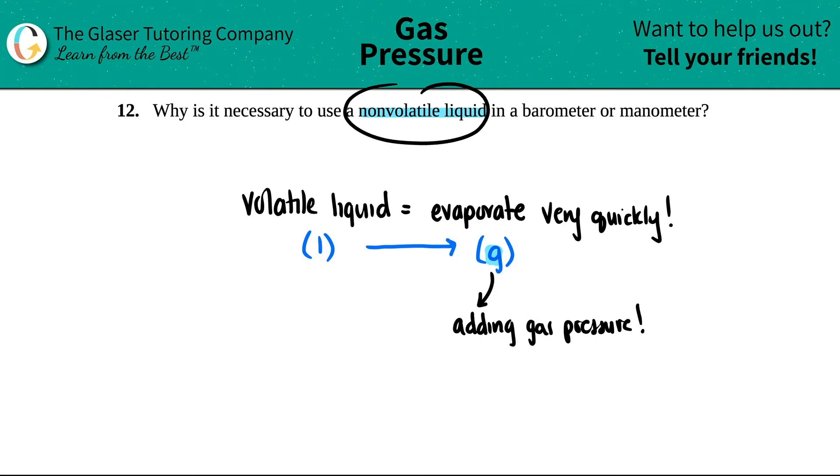Non-volatile liquids do not evaporate quickly. So they can stay in the barometer or the manometer and it will not turn into a gas. They will stay a liquid and there will be no added gas pressure.